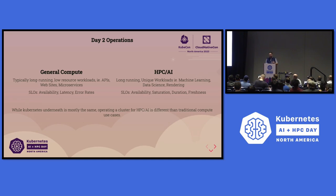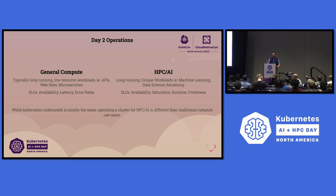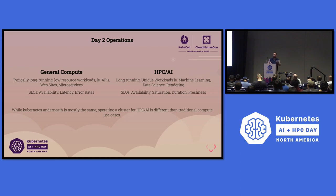With HPC and AI, it's a little bit different because the workloads are different. Oftentimes you're submitting a task, training a model — they're long running jobs — or you're rendering graphics or doing quantitative analysis. Those processes have a beginning and an end, and sometimes the time delta is pretty long. So availability, saturation, duration, and freshness — meaning is your data stale — are super important for HPC and AI workloads on Kubernetes.